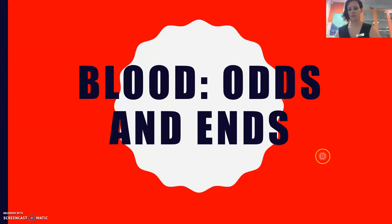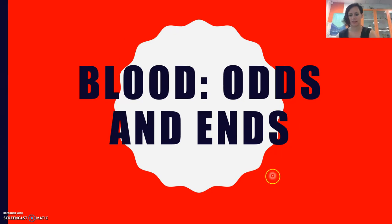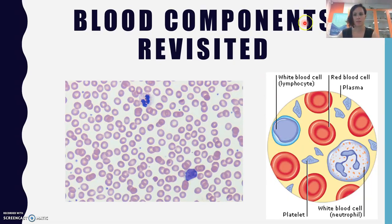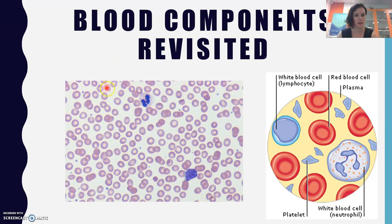We're going to cover some odds and ends from our blood system lesson last time. Our components revisited — keeping in mind this is a peripheral blood smear, so you take it out of your vein in your arm and you can see a lot of different things under the microscope. You've got those donut-shaped red blood cells or erythrocytes, five different kinds of white blood cells, tiny little platelets dotted around, and everything is suspended in plasma.